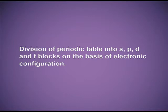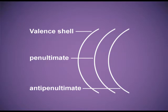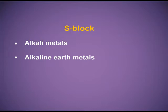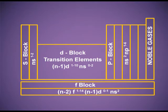Before that, the outermost shell is known as the valence shell. The shell inside the valence shell is known as the penultimate shell, and the shell inner to the penultimate shell is known as the anti-penultimate shell. For the S block, the elements are those in which the last electron enters the S subshell of the valence shell. The S orbital can accommodate two electrons, so in the S block there are two groups, known as alkali metals and alkaline earth metals. Their valence shell electronic configuration is nS1 to 2.